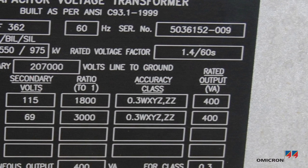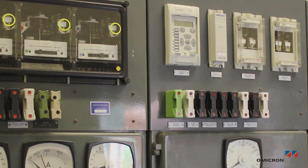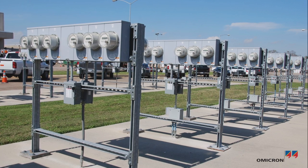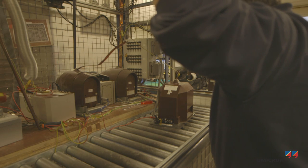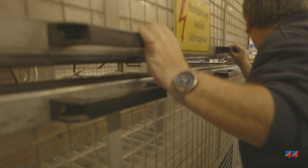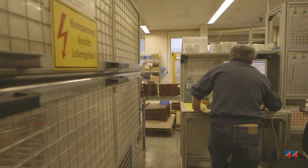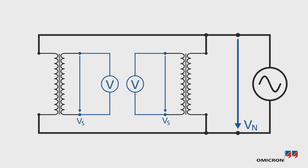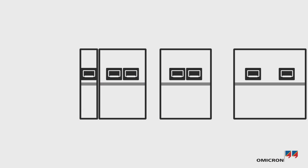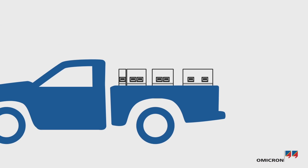The accuracy of the voltage transformer is important for a reliable electric power supply and correct revenue metering. Since the beginning of the 20th century, accuracy measurements have been performed at nominal voltage. During these measurements, the secondary voltage of the transformer is compared with the secondary voltage of a highly accurate reference transformer. Over time, these conventional approaches have been adopted for mobile use.